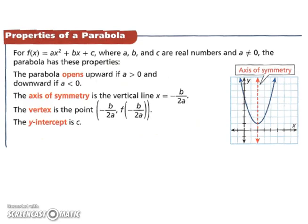So let's look at the properties of a parabola. We're going to look at our function here in standard form. So f of x equals ax squared plus bx plus c, where a, b, and c are real numbers. So we're not dealing with unreal numbers at this point. And like I said before, a cannot be 0 for this to work.